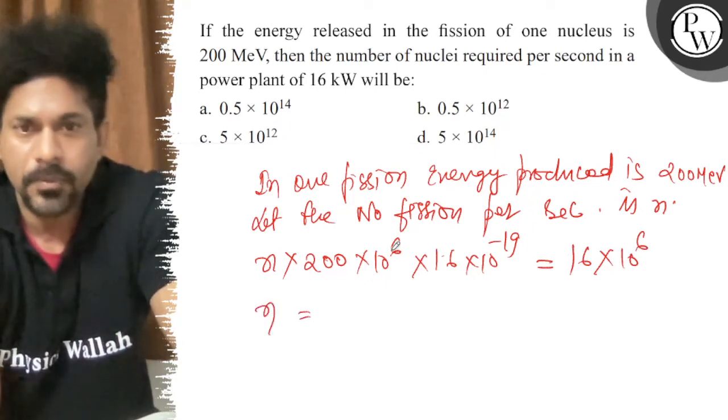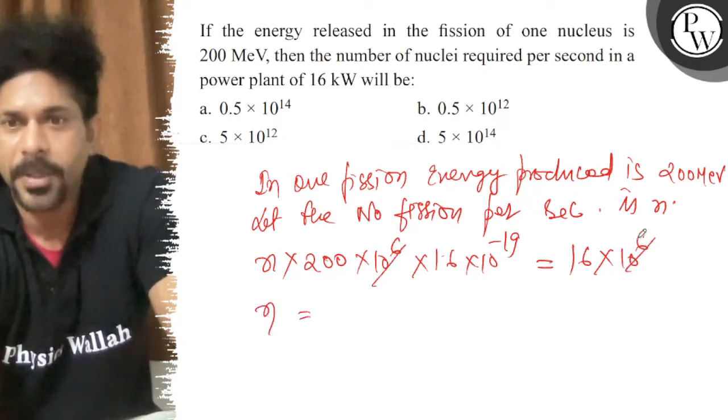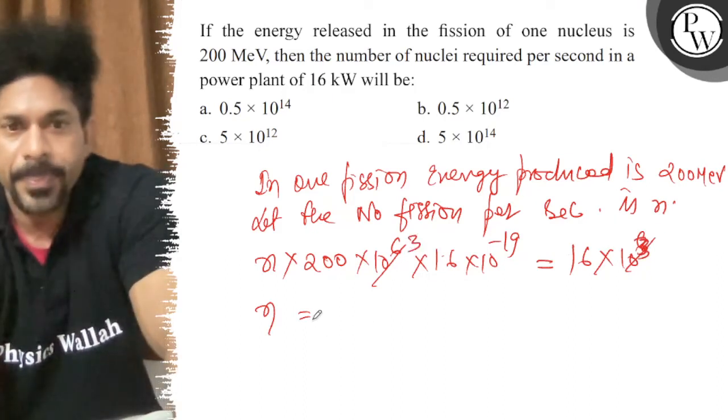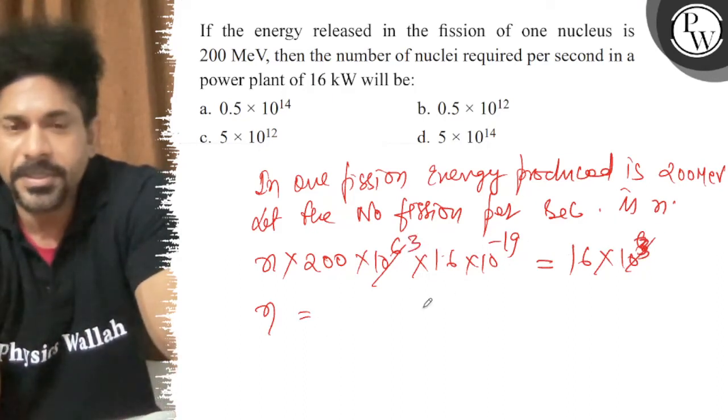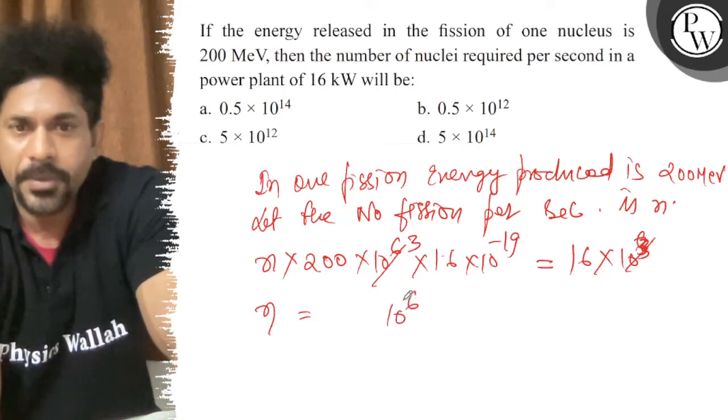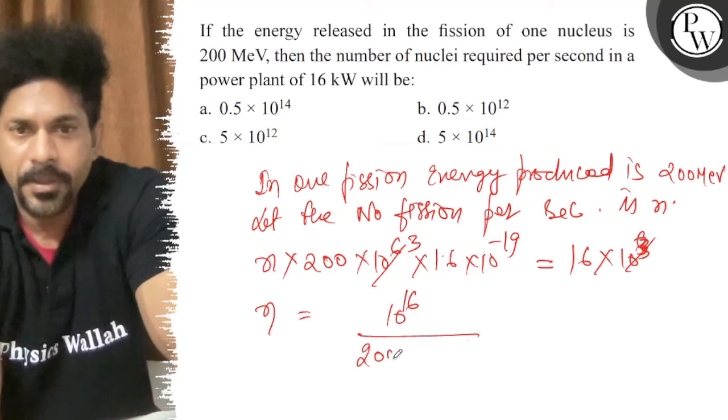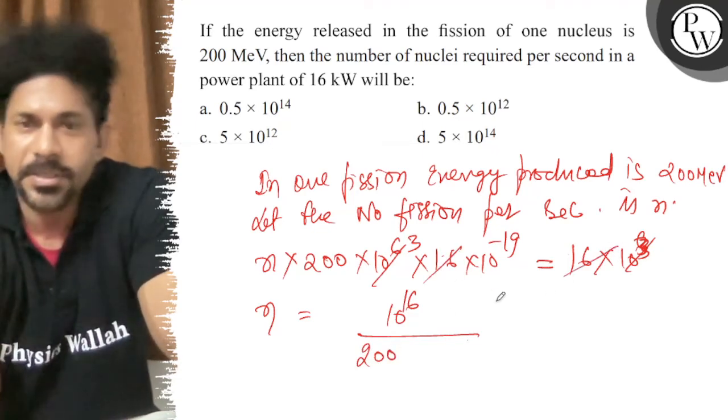So, n is equal to 16... sorry, power 3 is kilo, so it will be minus 3, 16. So, 10 power 16 will be up and divide by 200. So, 1.6 will be up and divide by 200.